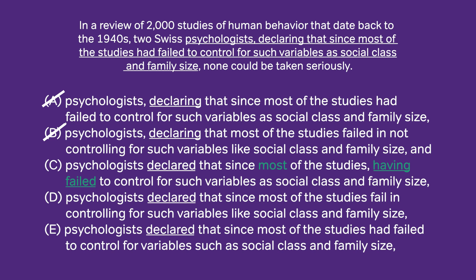That leaves us with D and E. We have a couple differences. Notice, first of all, we have a difference in tense: 'failed' versus 'had failed.' We're talking about studies, some of which date back to the 1940s. The main verb is already past, and the act of failing to control for variables is something that happened before the psychologist declared. Something that happens before the past has to be the past perfect — 'had failed.' It's not appropriate for the present tense; the failing is not happening in the present moment.